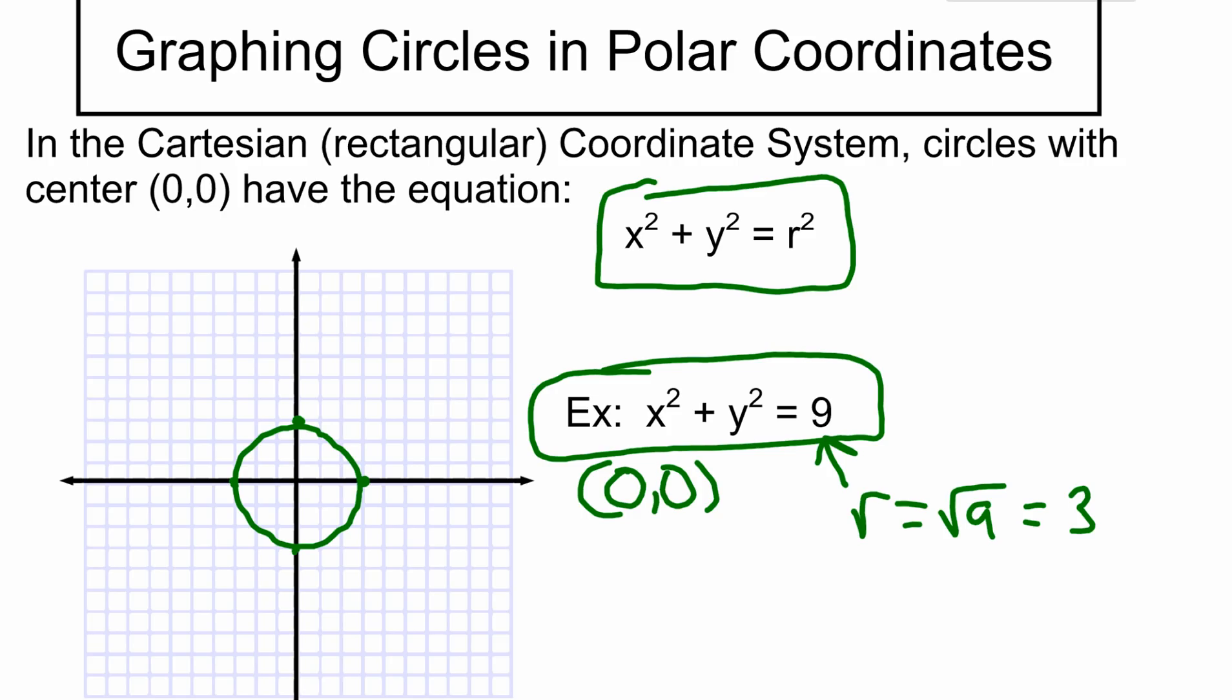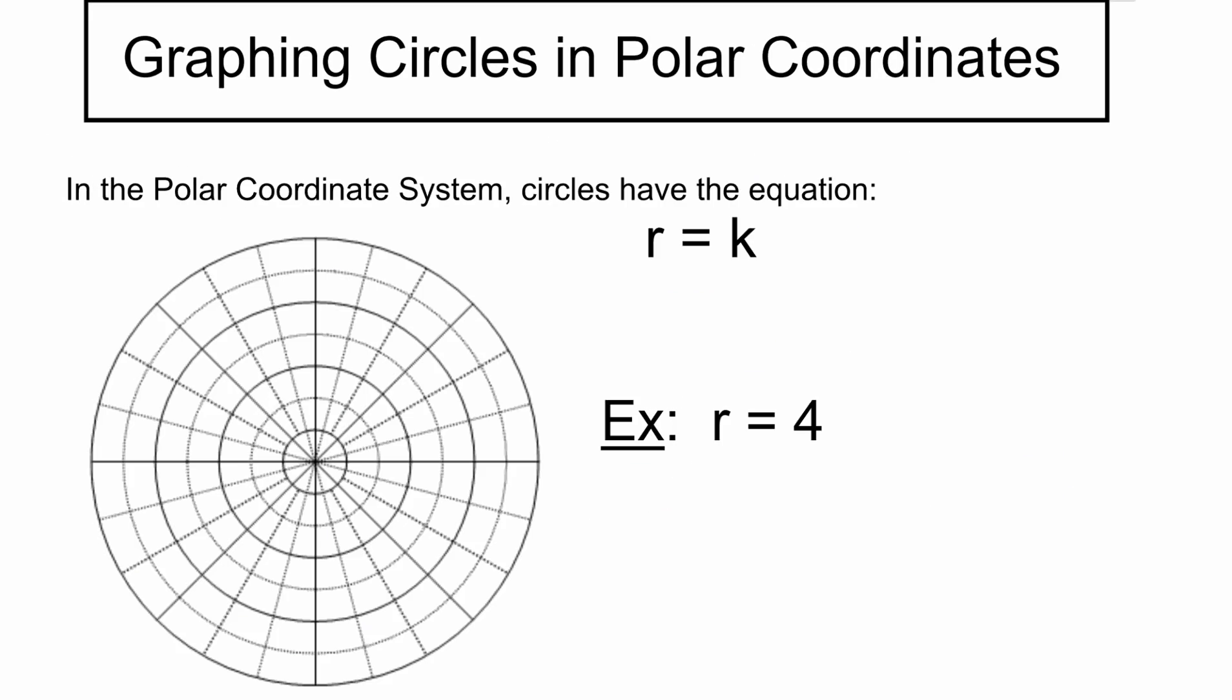In polar coordinates, it's just r = k. I alluded to this earlier. All you do is say, what's the radius? Then you've got your circle. As we get more advanced with polar, we'll be able to shift circles left, right, up, down. But for now, if it's r = 4, we go out 4.